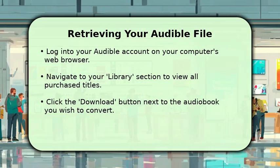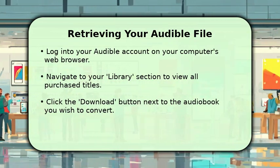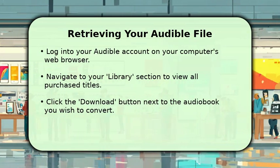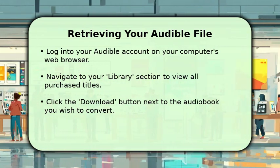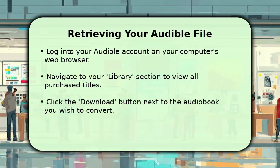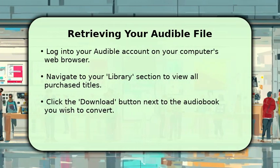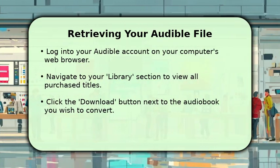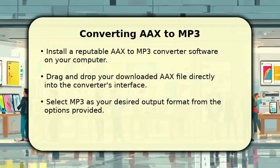Locate the specific title you want to convert and click the Download button right beside it. Your computer will then save the file as an AAX extension, typically in your Downloads folder, ready for the next crucial step.